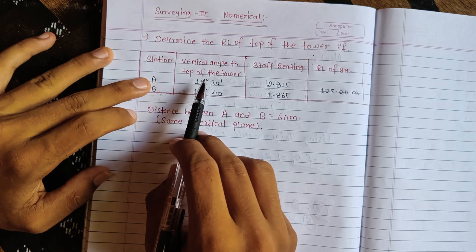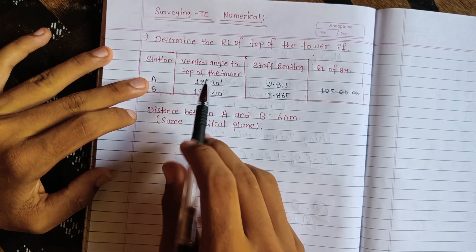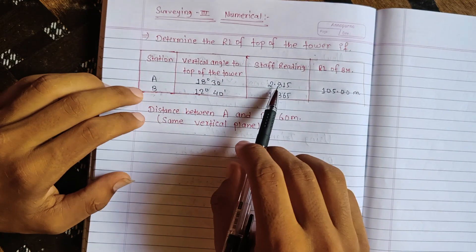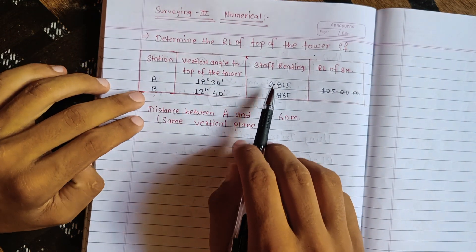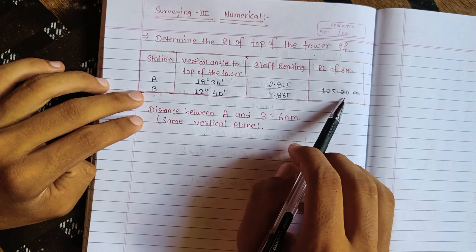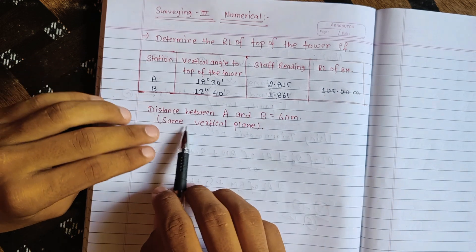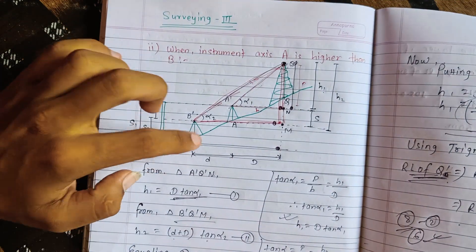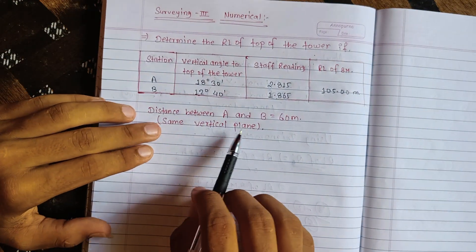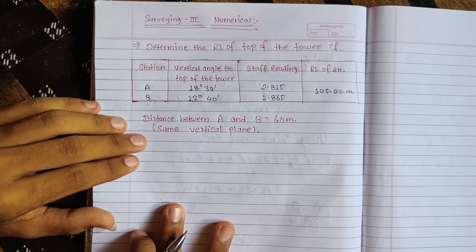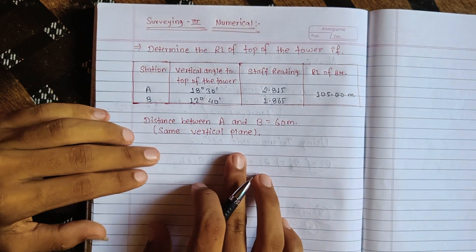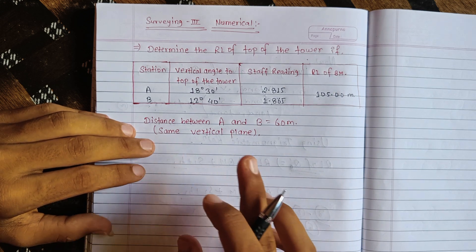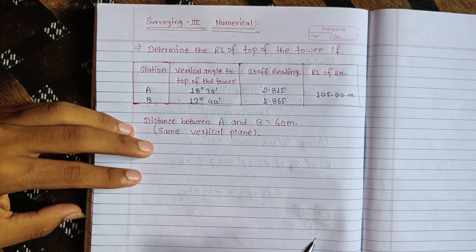The vertical angle is 18 degrees. The vertical angle using it in degrees, I established the beginning. S1 and S2 are already given. The distance between A and B is equal to 60 meters. It's in the same vertical plane. A and B are at same level, so the formula is straightforward.